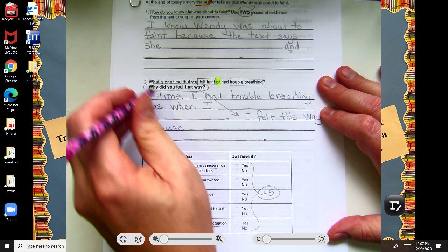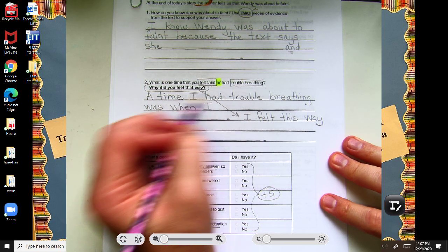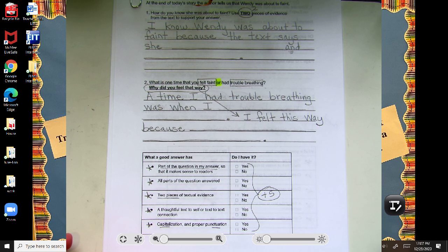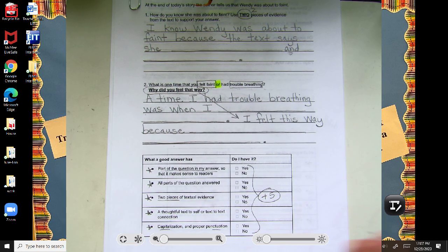Now, scholars, if for some reason you've never felt faint, or ever had trouble breathing, you could, I suppose, write for number two, I have never felt faint or had trouble breathing. And that way you're at least answering the question. But, I'm hoping you put a little more into it than just say, I'm just going to say I never have. You want to build that connection.